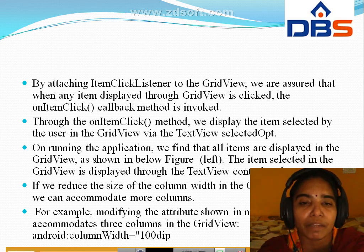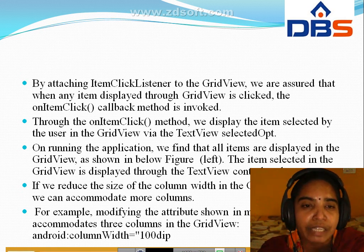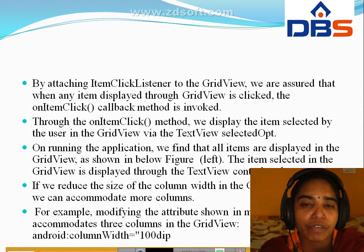We access the text view with the selected opt ID from this layout and map it to the selected opt text view object. We use selected opt to display the item selected by the user in the grid view. The array of strings called fruits is created — this is the array we want to display in the grid view. We create an array adapter that makes the elements in the string array of fruits appear in text view form. The array adapter is set to the grid view via the set adapter method to display its content. By attaching an item click listener to the grid view, when any item is clicked, the on item click callback method is invoked, and the item selected is displayed through the text view selected option.